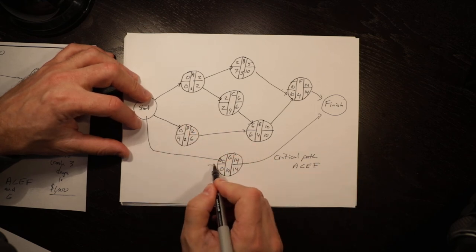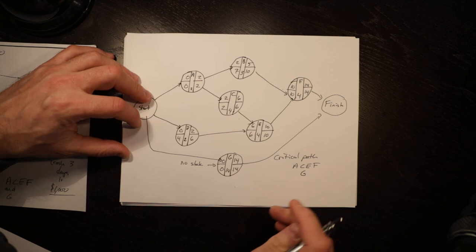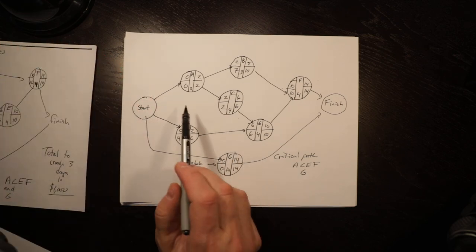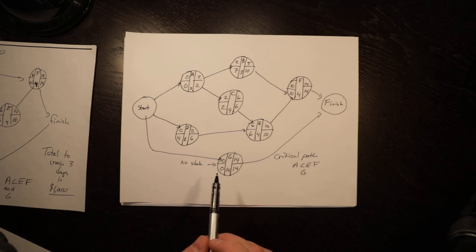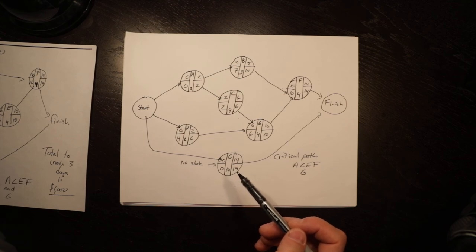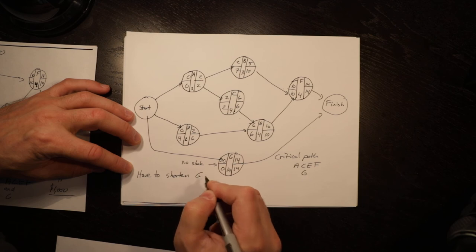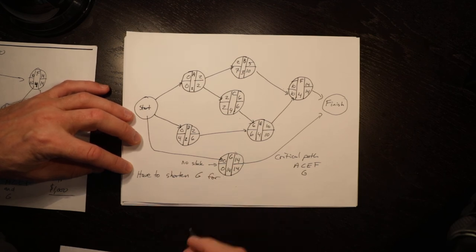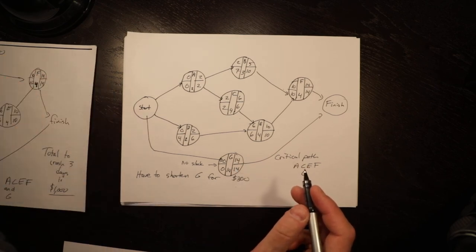But now we also have no slack here, so we also have a critical path at G. So what would happen is if we just shortened A, C, E, F, we wouldn't shorten the project because we would still have this one at 14 days. So that's why we do this incrementally. We look and we've discovered that another path has become critical. So we have to shorten G for $300 because it's the only activity on the path, so we have no other choice.